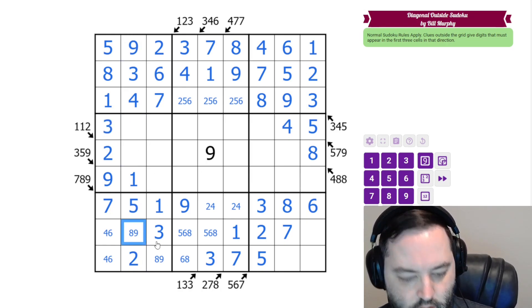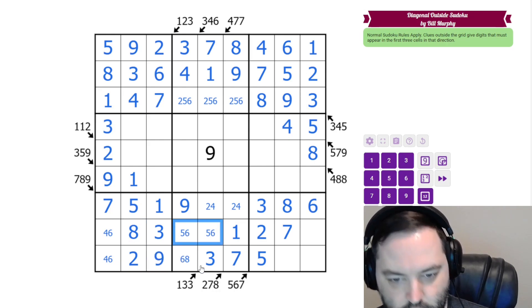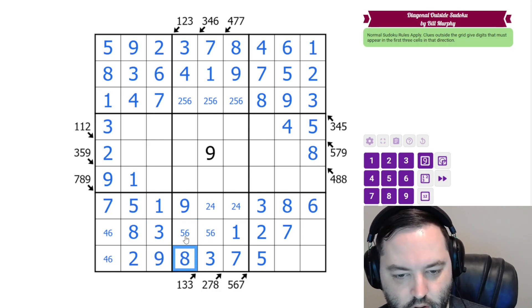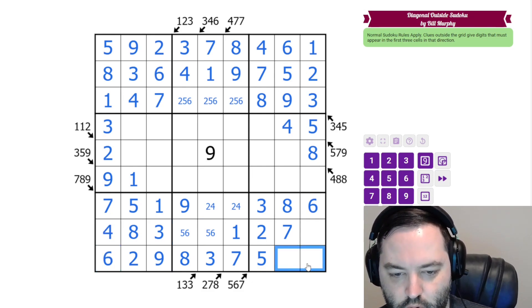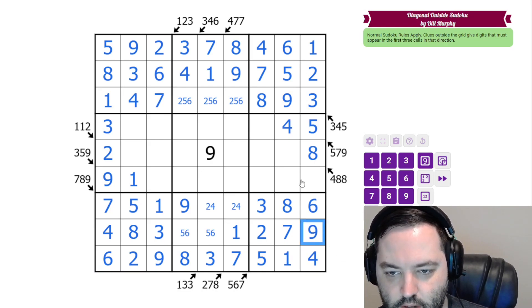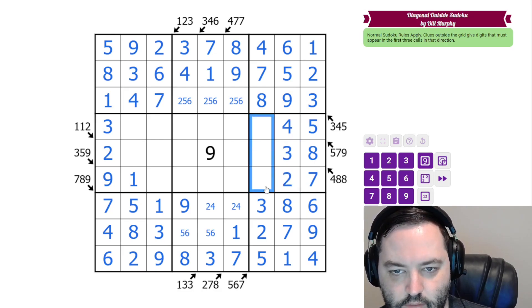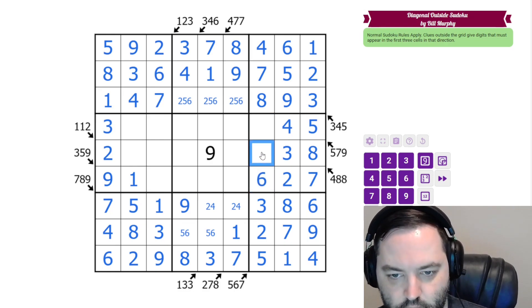The 9 here gives us 8, 9. That means 8 is not in these cells, so it must go here. 6 is in one of these cells, so this is 4, 6 in that order. These are 1 and 4, and this is 9. We have 7 to complete the column. These are 2 and 3. These are 1, 6, and 9, and we know the order of those as well.